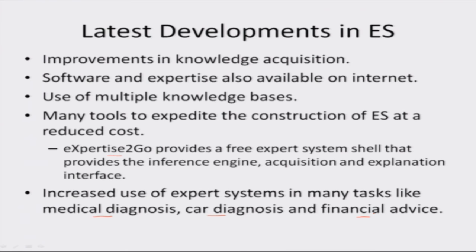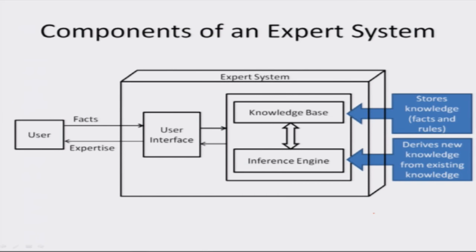There are three main components of an expert system: a user interface, a knowledge base, and an inference engine. The user interface is used by users to interact with the expert system, and by the expert system to ask questions, provide advice and conclusions, and offer justification for its advice. The knowledge base stores knowledge — a set of facts and rules. The inference engine is the brain of the expert system; it derives new knowledge from existing knowledge, chooses relevant rules, determines what questions to ask the user and in what sequence, triggers the rules, and provides conclusions and advice.